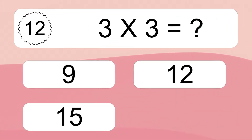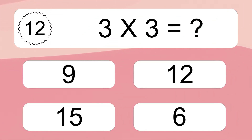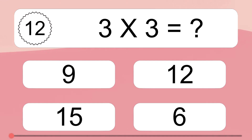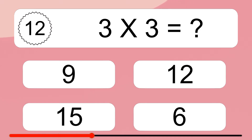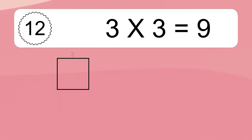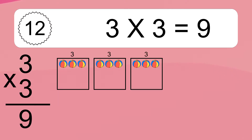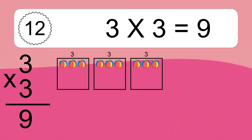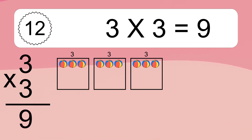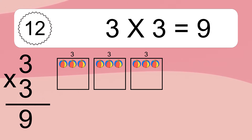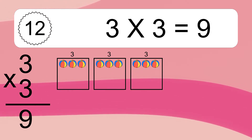3 times 3 equals what? 3 times 3 equals 9. We have 3 boxes, and each box has 3 colorful balls inside. If you count all the balls in all the boxes together, you will have 3 times 3 balls. This equals 9 balls.